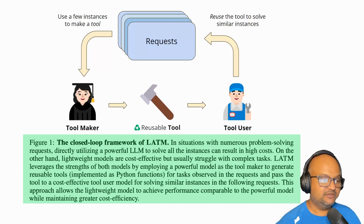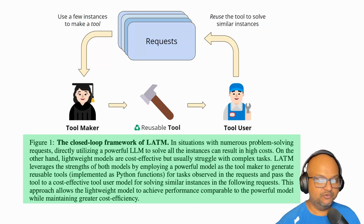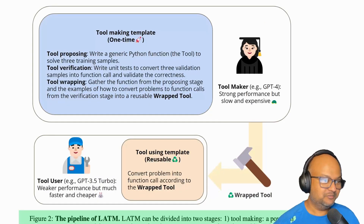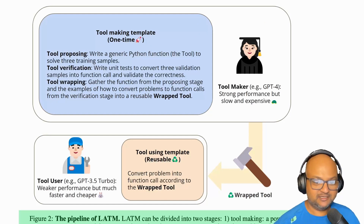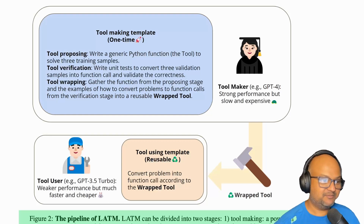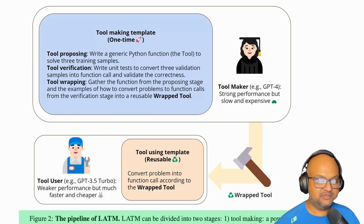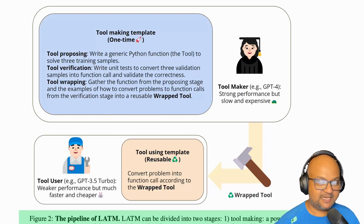Once you have a reusable tool, you can use the lighter weight or cheaper tool user LLM to solve your problems. The tool building process can be further broken down into three steps. The first one is to propose a tool, and you can do that by constructing a few-shot example with some training samples. You basically construct a prompt that uses those training samples and asks the LLM to generate some Python code to solve that problem or class of problems.